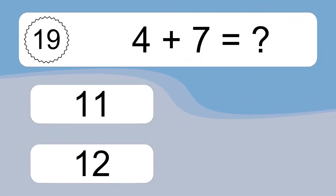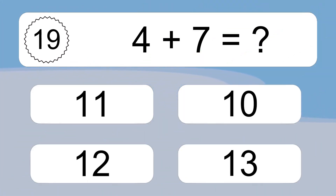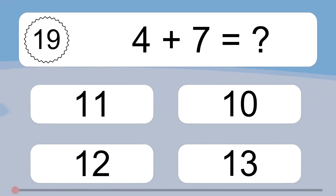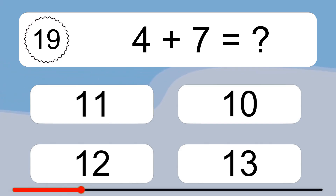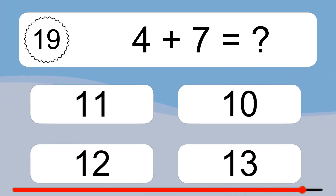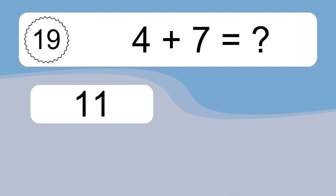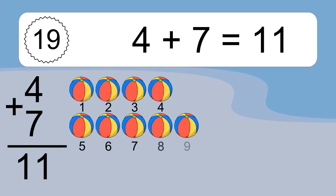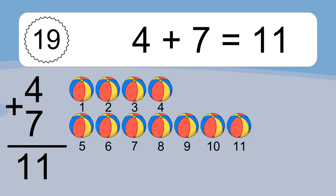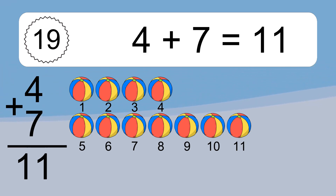4 plus 7 equals what? 4 plus 7 equals 11. Let's count it: 1, 2, 3, 4, 5, 6, 7, 8, 9, 10, 11.